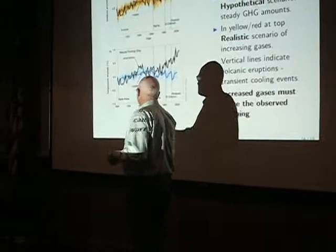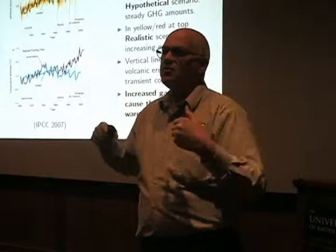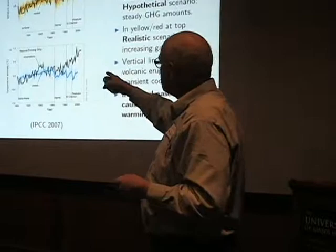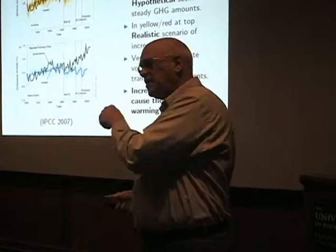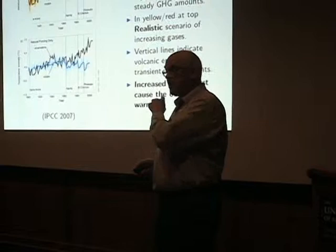When we do these simulations, we include all the other natural effects. These vertical bars indicate the eruptions of major volcanoes. Volcanoes spew sulfate into the atmosphere that acts to cool the planet for a short period of a year or two, and we see those cooling events associated with those volcanoes. This kind of comparison indicates that we've got to include the greenhouse gases — and that means the changing greenhouse gases are, in fact, the source of the warming that we've observed.